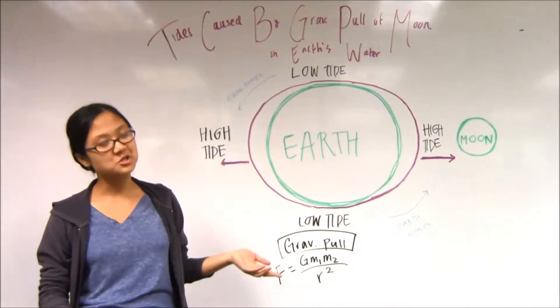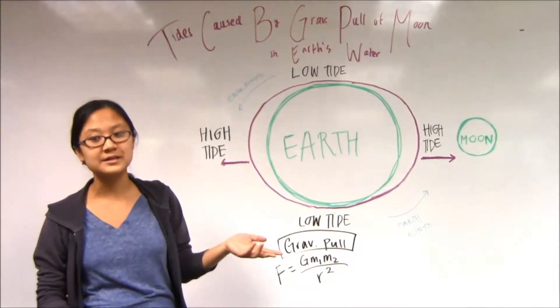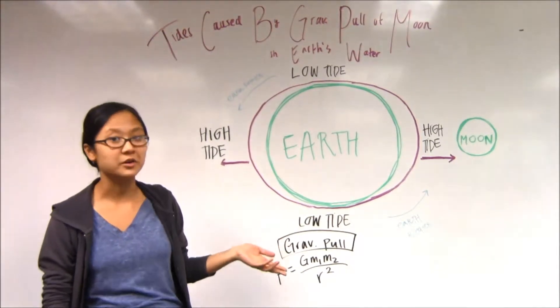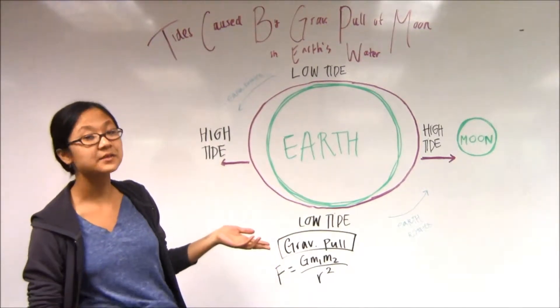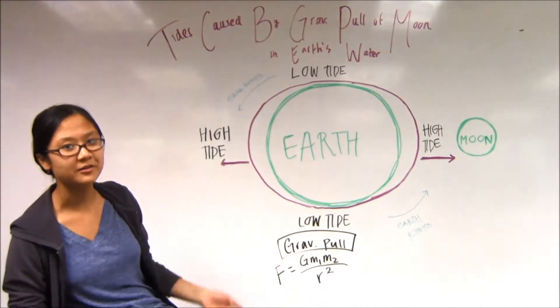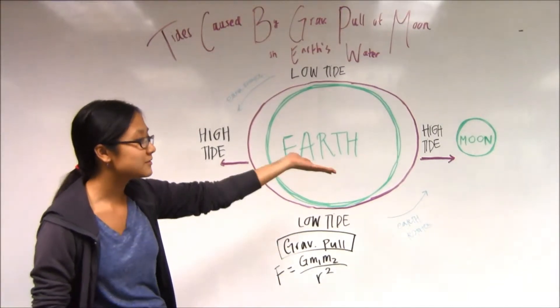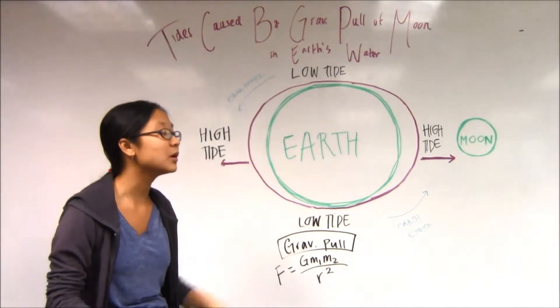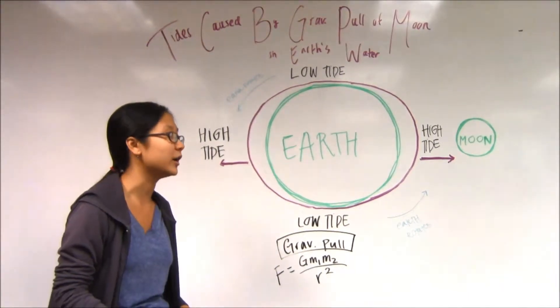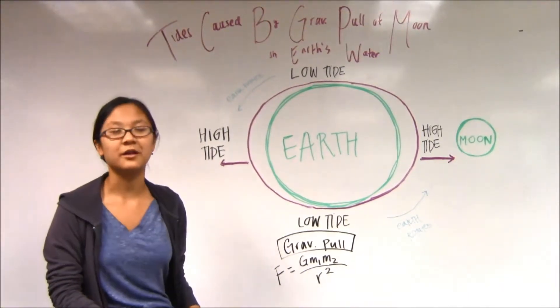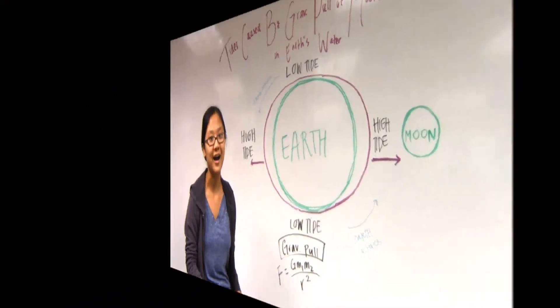The gravitational pull of the Moon doesn't act on all of the Earth because the mass of the Earth is much greater than the mass of the Moon. When the gravitational pull of the Moon pulls on the Earth's water, it creates the phenomenon that we call high tide.